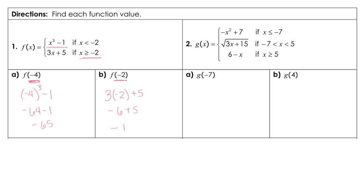Moving on to number 2 — same process — we're substituting in negative 7, and notice that's going to fall here, so the negative is on the outside. We substitute in negative 7 squared plus 7. The inside is positive 49; however, the negative out here makes that negative 49 plus 7, so that gives us negative 42.